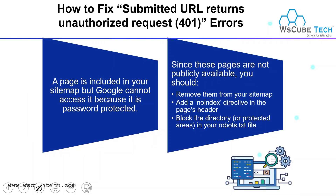How to fix submitted URL returning unauthorized request: If you find that URL, it means a page is included in your sitemap but Google can't access it because it is password protected — that type of URL returns a 401 error. Since these pages are not publicly available, you should remove them from your sitemap, add a no-index directive to the page, and block the protected directories in your robots.txt file.